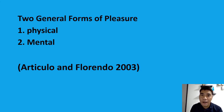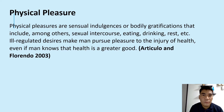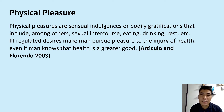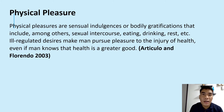Let us clarify the utilitarian concept of pleasure. Physical pleasures are sensual indulgences or bodily gratifications that include, among others, sexual intercourse, eating, drinking, rest, etc. Ill-regulated desires make man pursue pleasure to the injury of health, even if man knows that health is a greater good. This kind of pleasure is considered animalistic or beastly and makes up the lower or inferior types of pleasure. Physical pleasure appeals to people's lower faculties, and persons desiring nothing but physical pleasure are considered lowly and less dignified.